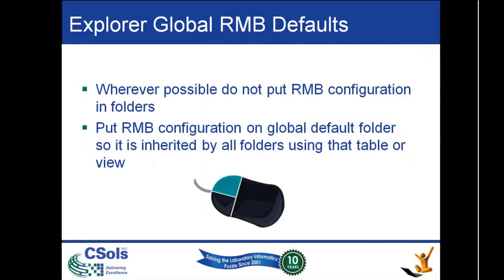An important point for setting up the right mouse button functions is to put them in the global defaults. Each table or view has a global default folder, and the RMBs on that global folder are inherited by all folders which use that table or view. This is essential for easy maintenance — we have only one place to go back to change our RMBs. If we change one in the global, it is changed on any number of other folders which inherit that configuration.